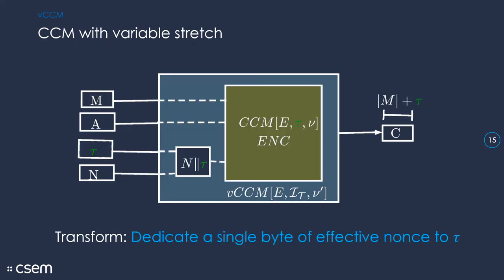And this is all it takes to transform CCM into a scheme that is secure with variable stretch. We simply take one byte of the nonce and dedicate it to an encoding of the tag length. And that's it. We just take one byte of the nonce and use it for the tag length. So, it's very simple, and it may not look very impressive in terms of beautiful cryptographic design, but the beauty lies in its simplicity because it makes it really easy to use and implement correctly.